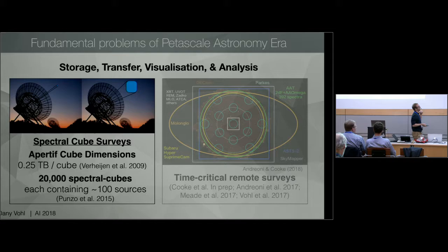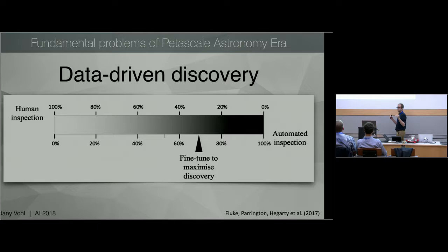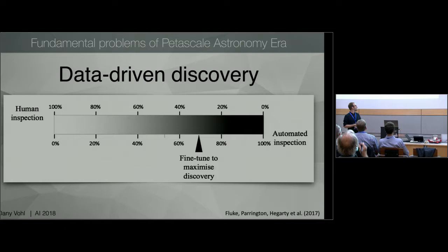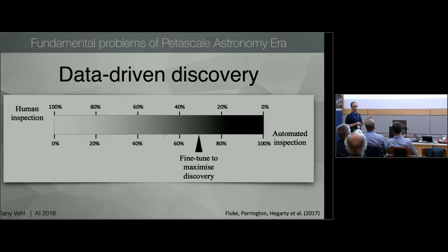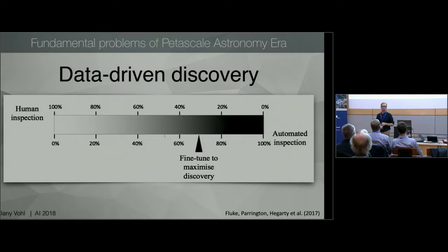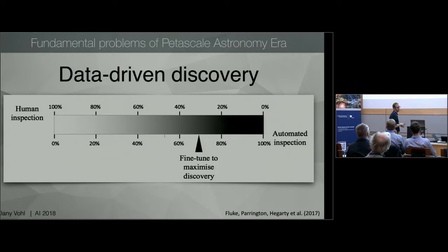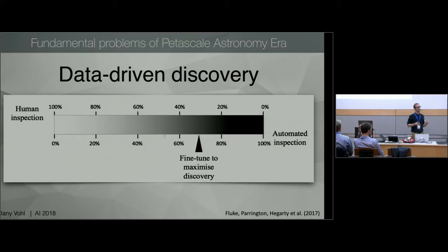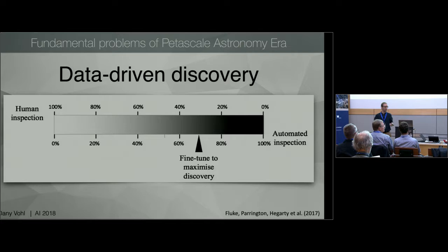Starting with spectral cubes: Chris Fluke came up with this idea that there should be some balance between human input and machine. Obviously we don't want to look at 20,000 spectral cubes times 100 sources by eye — that would be very impractical. But we also don't want to leave everything to machine learning algorithms because they might miss interesting things. There's a fine-tuning that we need to do to maximize our science, and we can expect humans will still be in the loop for discovery, since once your algorithm has output results you still need to make sense of them.